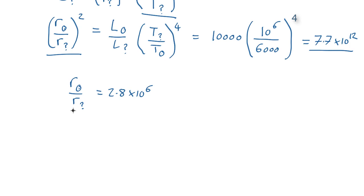So whatever this mystery object is, is 2.8 million times smaller than the Sun. The radius of the Sun is about 695,000 kilometers. So we find that the radius of the mystery object equals the radius of the Sun over 2.8 by 10 to the 6. So that's 695,000 kilometers over 2.8 million, which comes out as 0.25 kilometers, 250 meters.